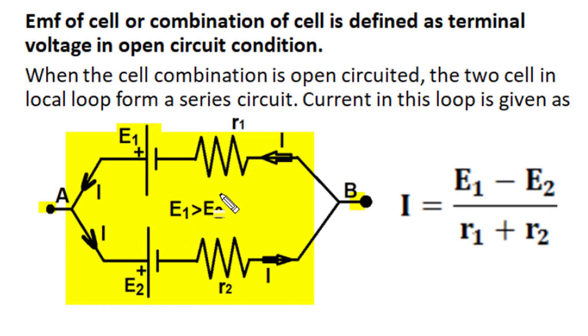But in this cell combination, since the EMF of two cells E1 and E2 are not the same and there is a local loop formation, even when this parallel cell combination is in open circuit, there is a local loop forming a series circuit of two cells. In that local loop, the effective EMF is E1 minus E2, and total series resistance is R1 plus R2, so the current in the local loop is given by this expression.